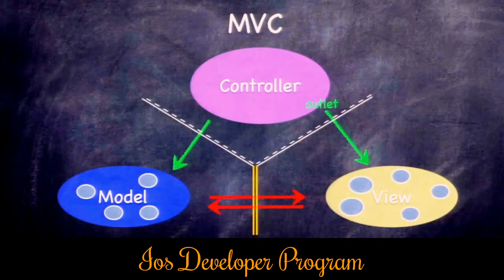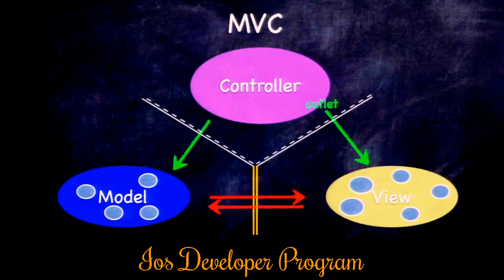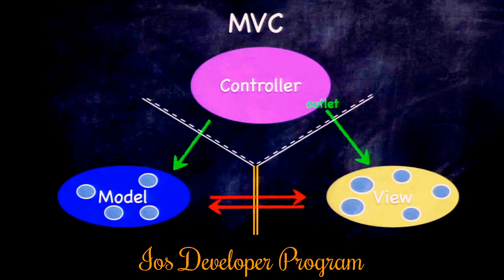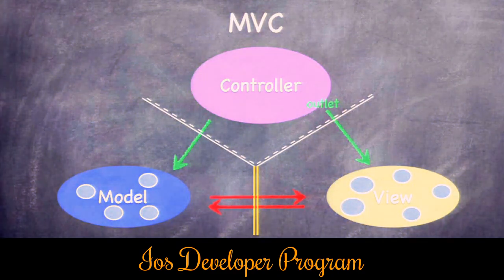Model to view communication? Never. The model is completely UI-independent, so there's absolutely no way it could talk to a view object. Similarly, since view objects are generic, they can't be talking to any specific model — they need a controller to interpret a model for them. That's why it's a double yellow line. Never go across that line, ever.